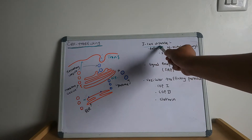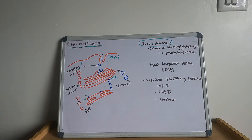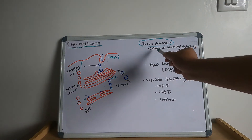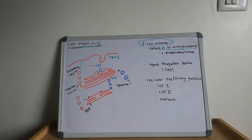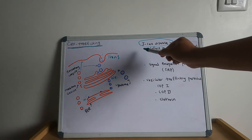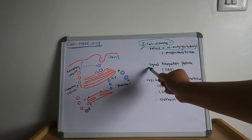Now let us move to I-cell disease. I-cell disease is an inherited lysosomal storage disorder — an autosomal recessive disorder — caused by a defect in N-acetylglucosamine-1-phosphotransferase. This leads to failure of the Golgi to phosphorylate mannose residues, resulting in decreased mannose-6-phosphate on glycoproteins, so proteins are secreted extracellularly rather than delivered to lysosomes. Clinical features include coarse facial features, gingival hyperplasia, clouded corneas, restricted joint movements, claw hands deformities, kyphoscoliosis, and high plasma levels of lysosomal enzymes. It is often fatal in childhood.